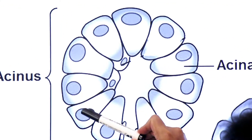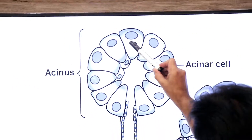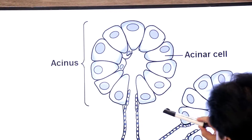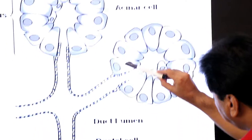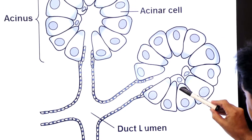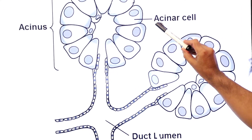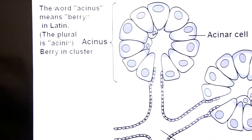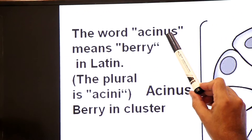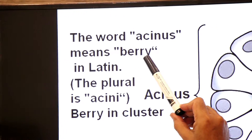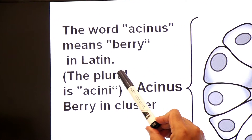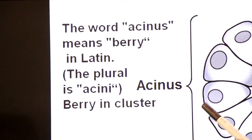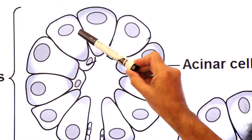Here you see a secretory unit of pancreas known as acinus. This is a secretory unit of pancreas known as acinus, made up of acinar cells. The word 'acinus' means 'berry' in Latin, and the plural is 'acini' — these cells are arranged in clusters.